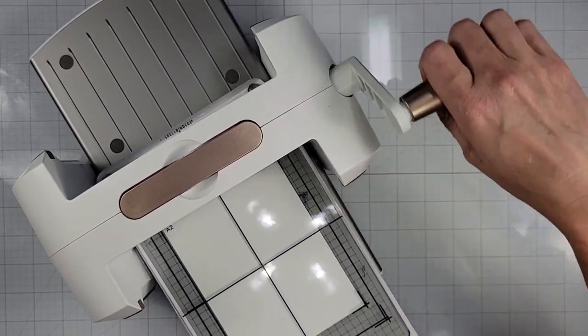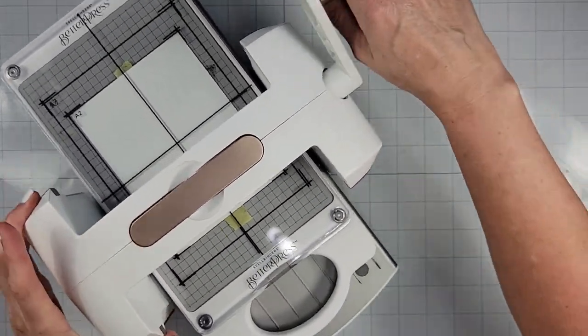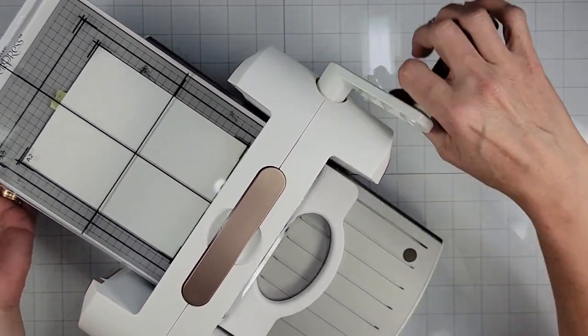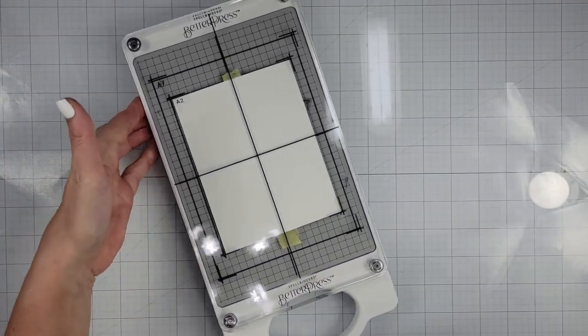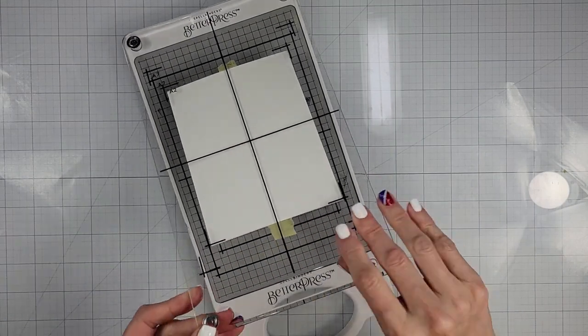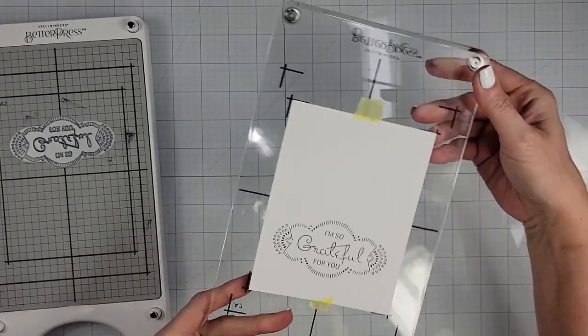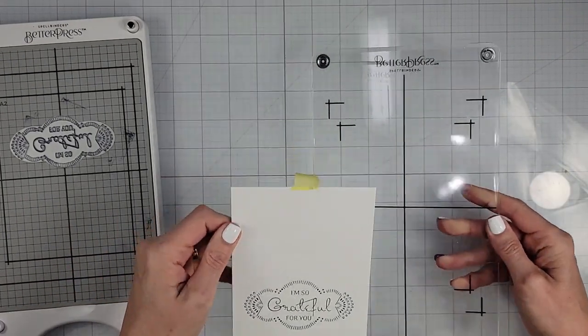And we're just going to run that through. It doesn't get a lot of pressure. It's very soft going through the machine. But I can already see that it definitely pressed into that cardstock. So voila. This one is all done.